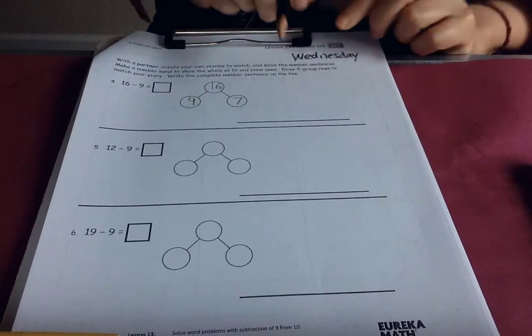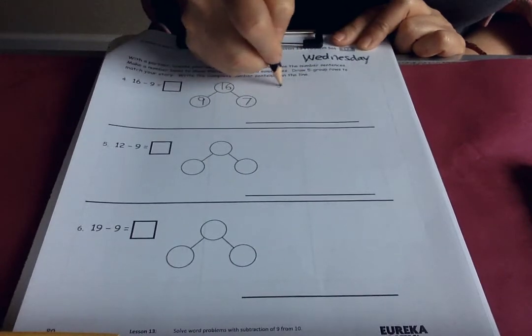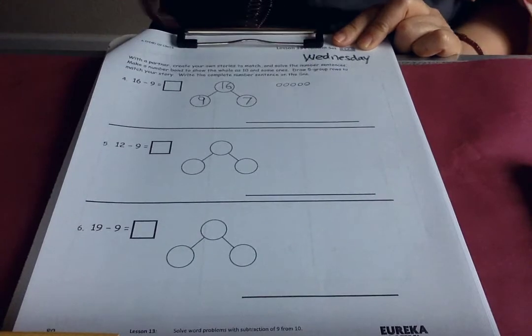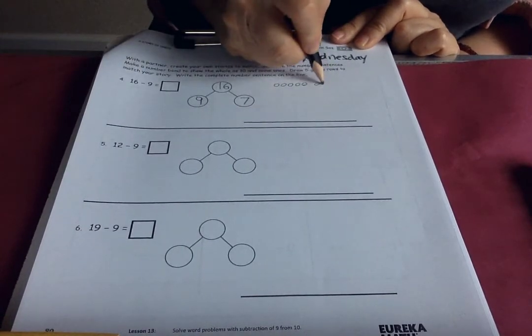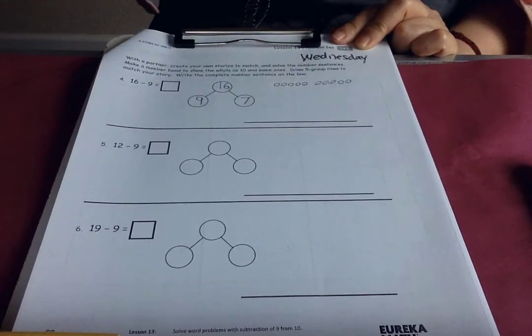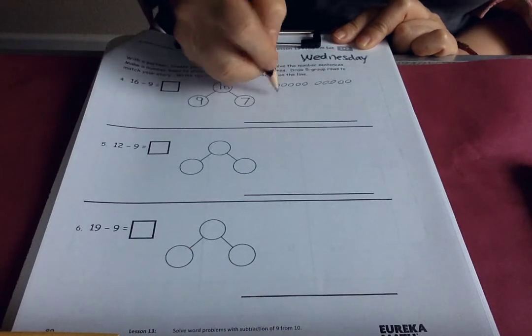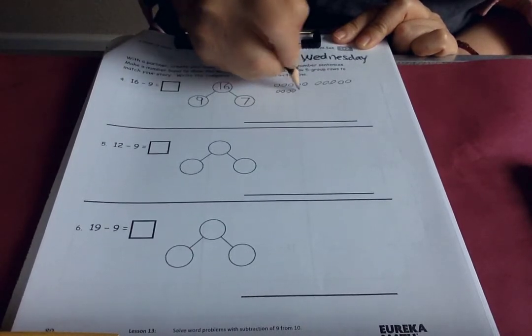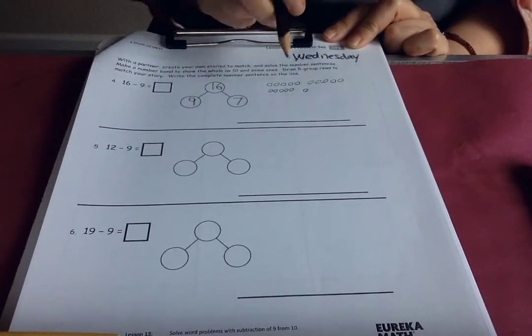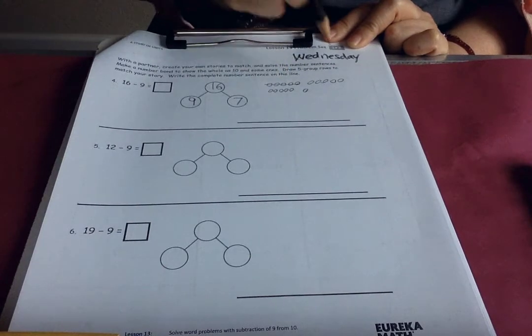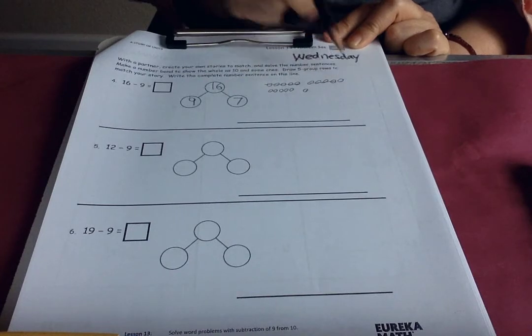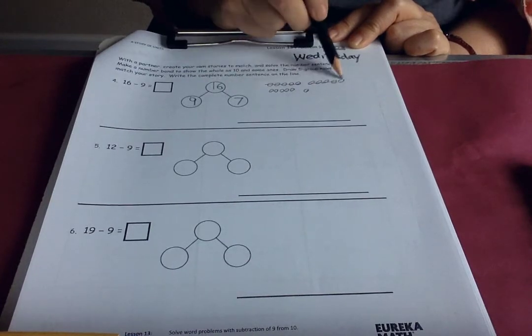They're saying do some five groups as well. So we could also do a picture like this: one, two, three, four, five, and then six, seven, eight, nine, ten. Two five groups. Sixteen is two five groups and a six: one, two, three, four, five, and six. Now we're going to take away nine, so that is one five group and four. We don't quite take away ten, right? And we have five, six, seven left.